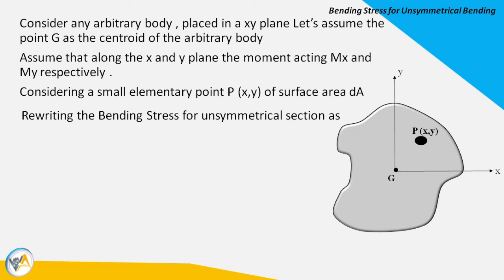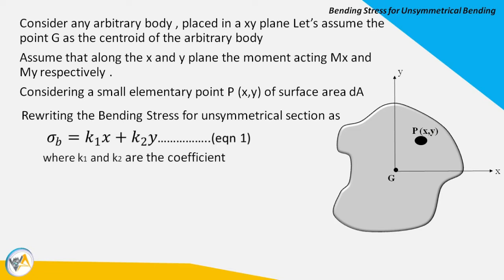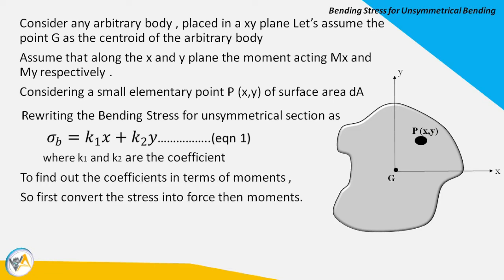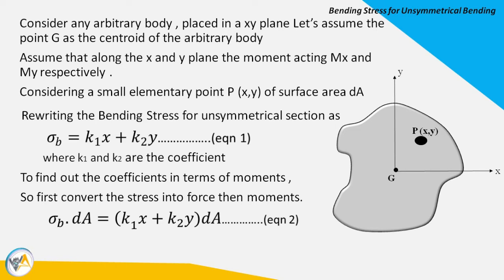We can write the bending stress for an unsymmetrical section as σb = k1·x + k2·y — call this equation one. Here, k1 and k2 are coefficients in terms of moment and moment of inertia. To find these coefficients, we first convert stress into force by multiplying the stress by the small element area dA, giving σ·dA — call this equation two.